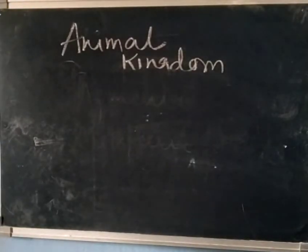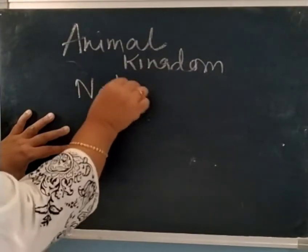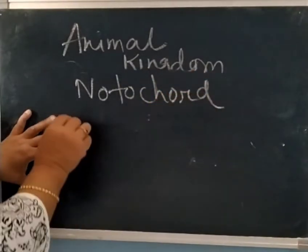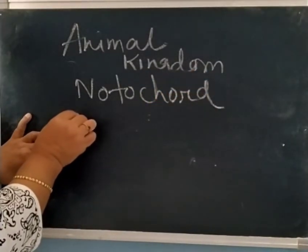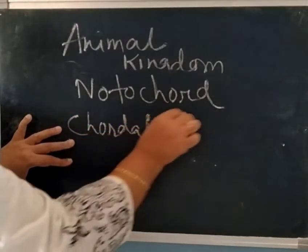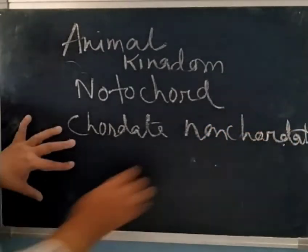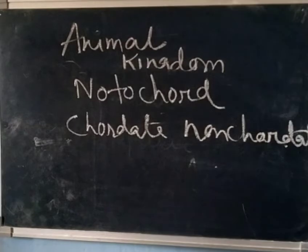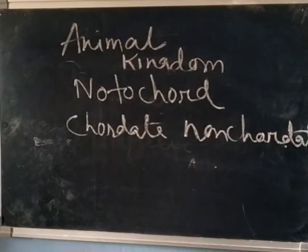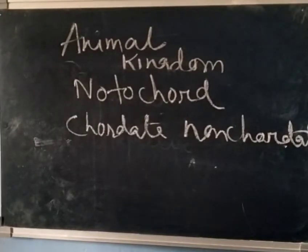Then there is the head and thorax. The next important criterion is the notochord. On this basis, animals are divided into chordates and non-chordates, meaning whether a backbone is present or not. The notochord is a rod-like structure formed on the dorsal side during embryonic development. Those who have it are called chordates; those who don't are called non-chordates or invertebrates.